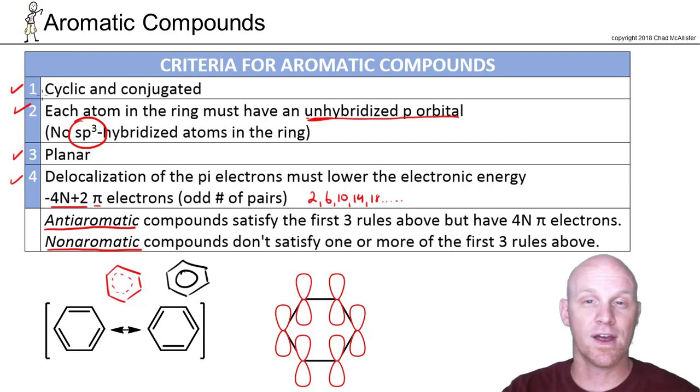Cyclic and conjugated, then move on and say, are there any sp3 atoms in the ring? If there are, it's not going to be aromatic. Finally, can it be planar? And then you want to finally go and count the electrons.